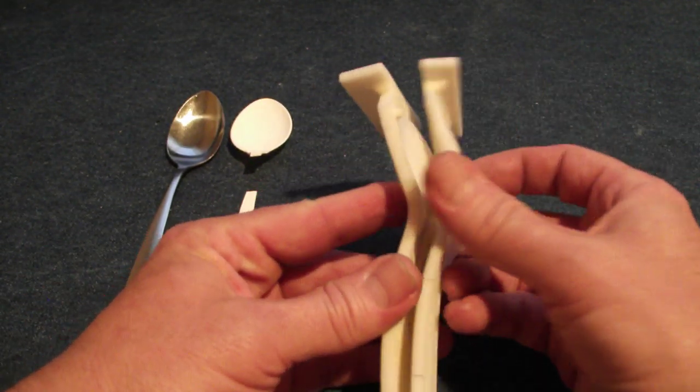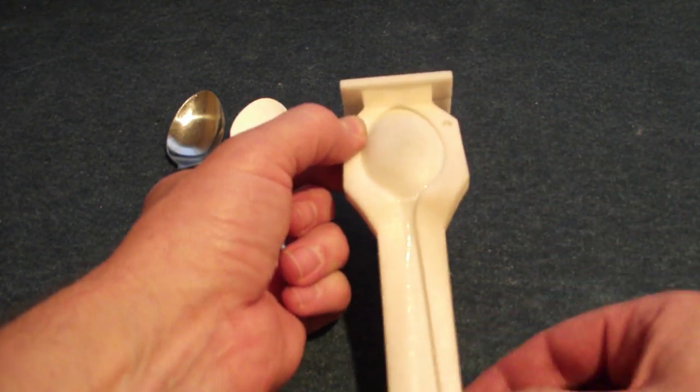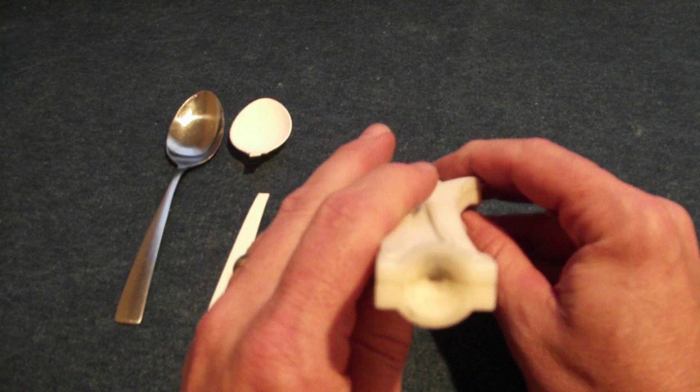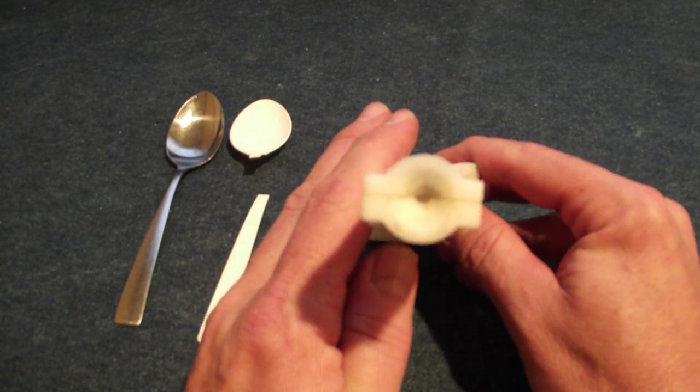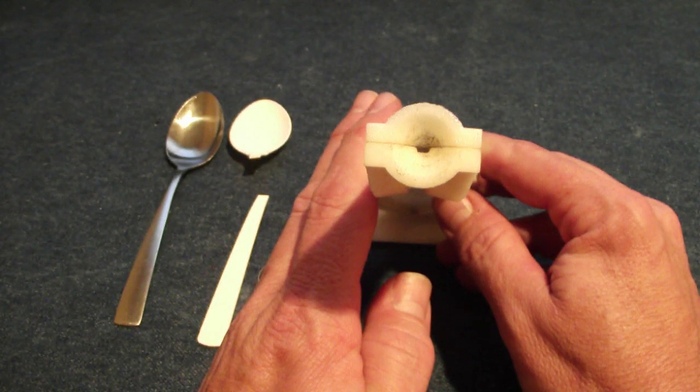What we do is we clamp this together, use a series of clamps along the edge. Through the hole in the end, we can actually pour molten metal directly into it.